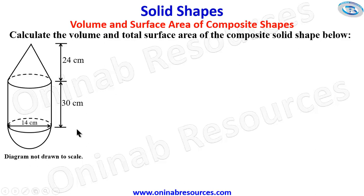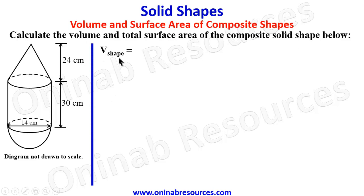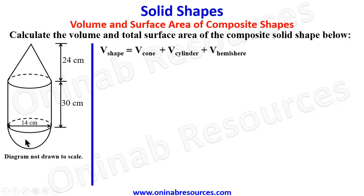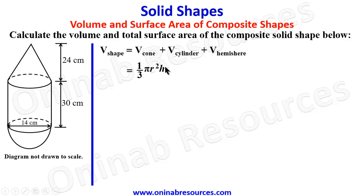In our solution we start with the volume of the shape. The volume of the shape is going to be the volume of the cone plus the volume of the cylindrical body plus the volume of the hemispherical base. The volume of a cone is (1/3)πR²h, where small h is the height of the cone.